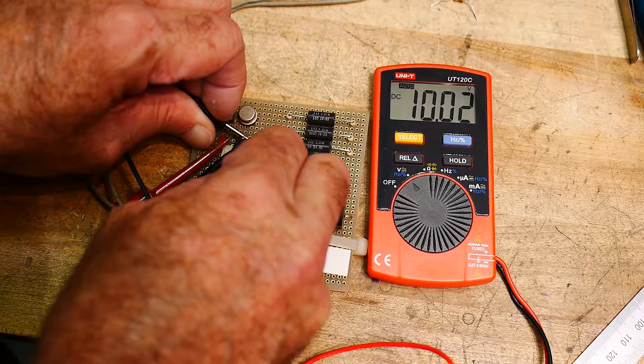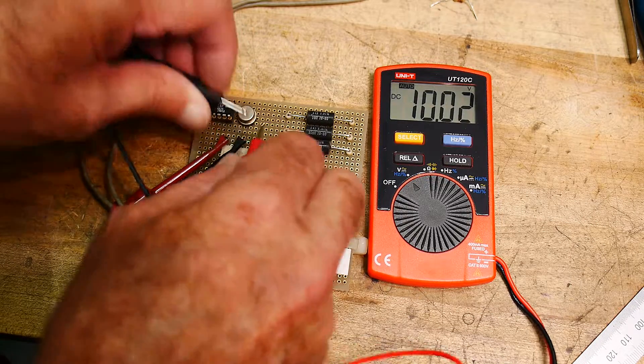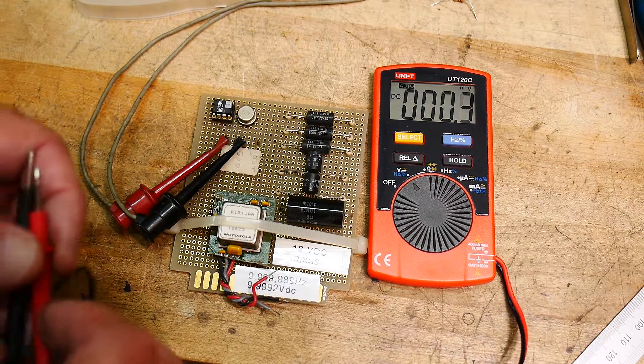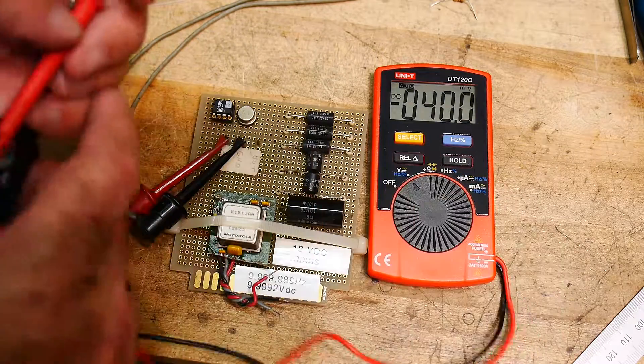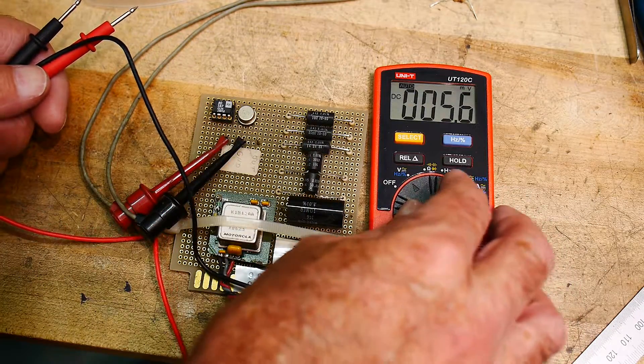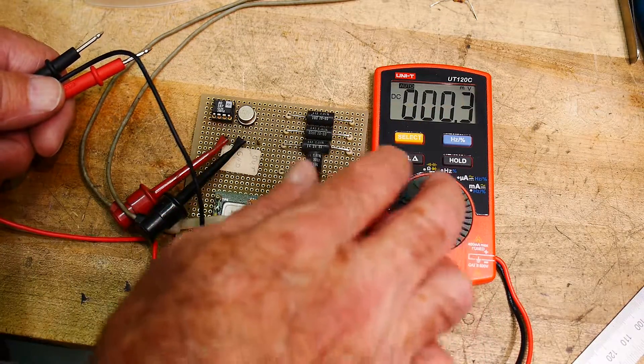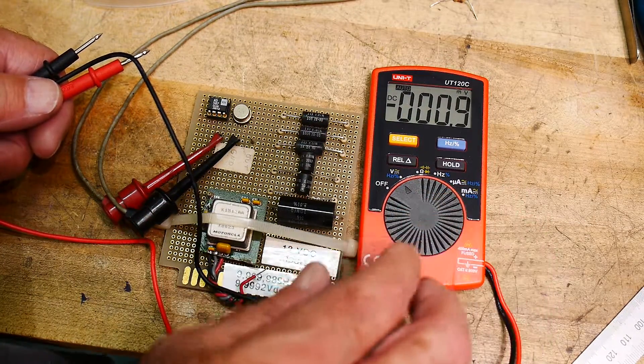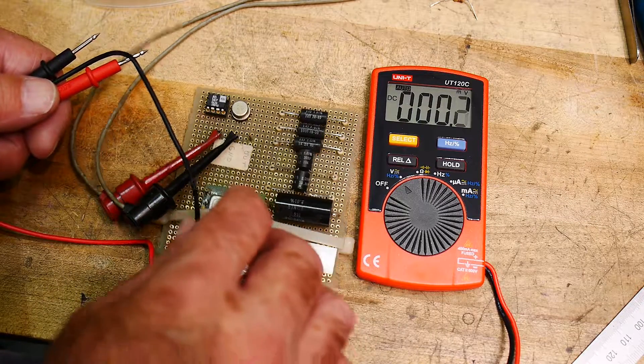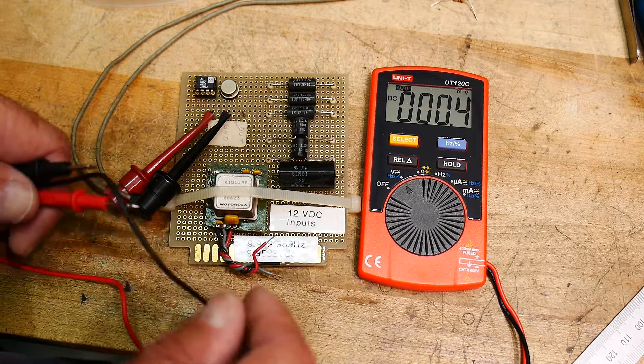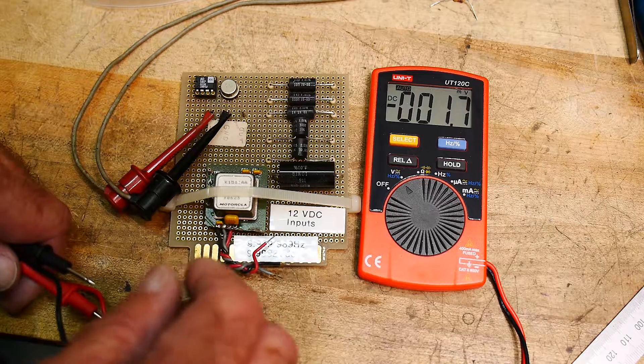So it's 0.02 off, but not bad. I could test milliamps I guess if we wanted to, but you know, these things are pretty accurate. These little cheapy meters are actually getting pretty accurate these days, so they can be cheap and not so bad.